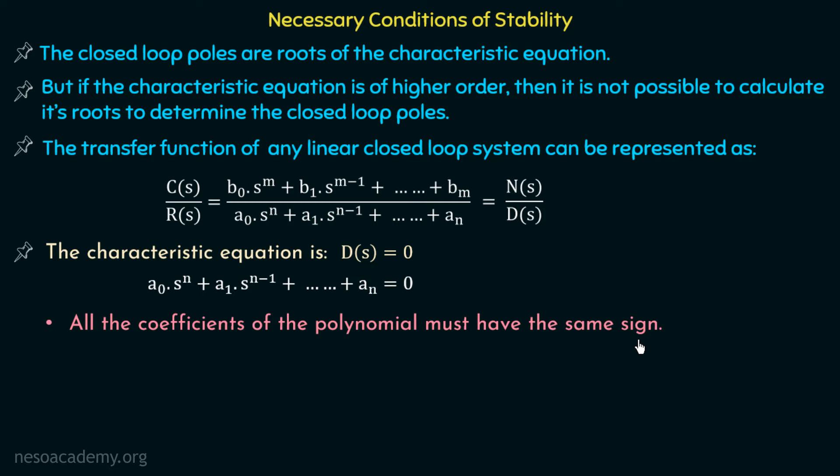The first necessary condition is that all the coefficients of the polynomial must have the same sign. If this is the characteristic polynomial, all the coefficients must be positive, or all must be negative — they must all share the same sign. This is the first necessary condition for stability.